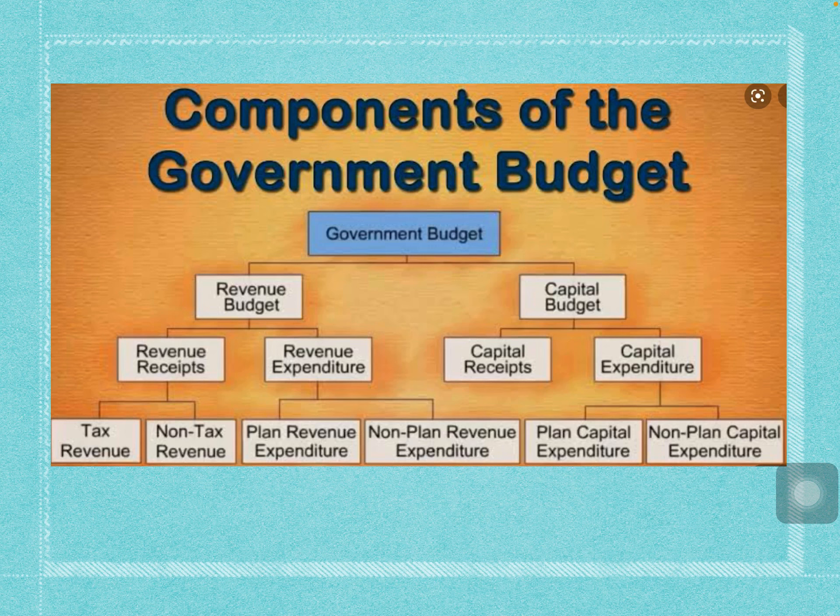The budget is all about revenue and expenditure — how much money we are going to get as revenue and how much money we are spending in the economy. That will be calculated for one particular year, which will be called the financial year.